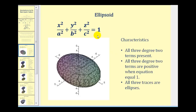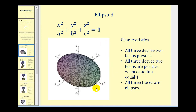Here is the form of the quadric surface that creates what's called an ellipsoid. Here are the characteristics: all three degree two terms are present, all three degree two terms are positive when the equation is equal to positive one, and all three traces are an ellipse.